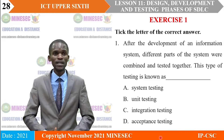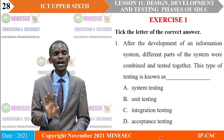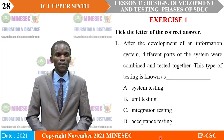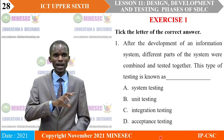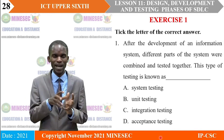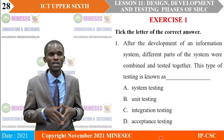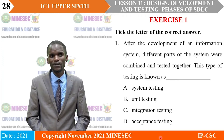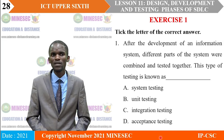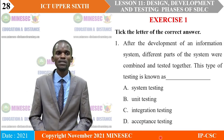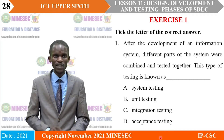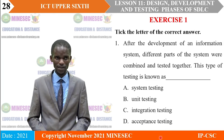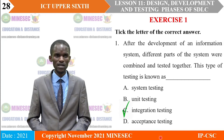Having come so far in our lesson, let us look at some exercises to find out how much we can recall. Question 1: after the development of an information system, different parts of the system were combined and tested together. This type of testing is known as: A, system testing; B, unit testing; C, integration testing; or D, acceptance testing? The correct answer is C — integration testing.